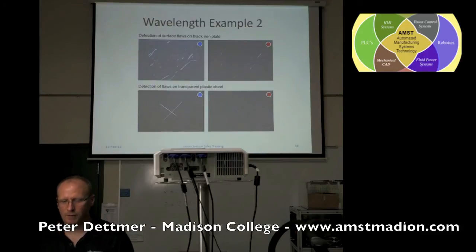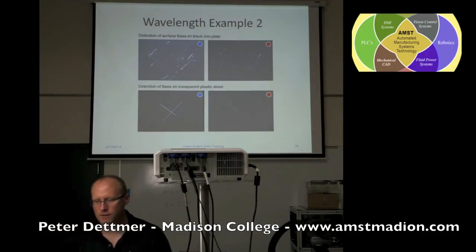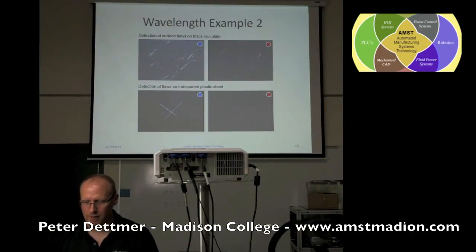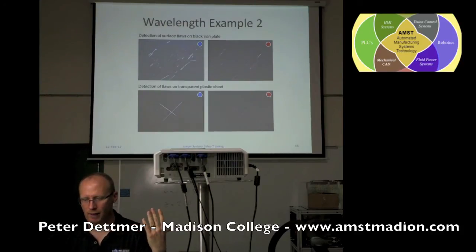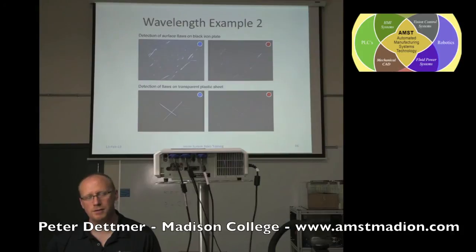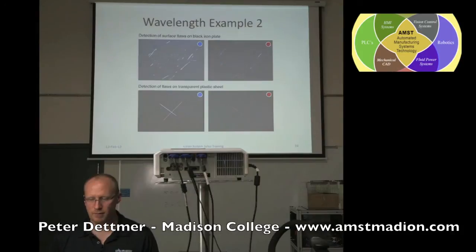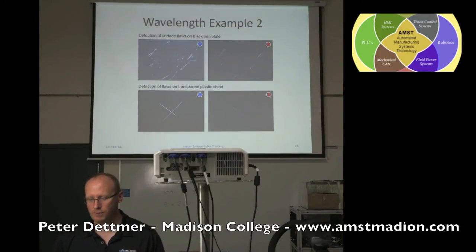Another wavelength example: we're trying to detect a surface flaw on a black iron plate. You can see that blue lighting and filtering versus red reveals a lot more of the scratches on the surface. We can also look at transparent plastic sheets, where the blue light highlights scratches much more versus red lighting on the right side.